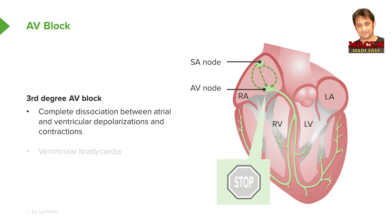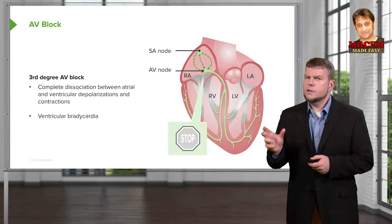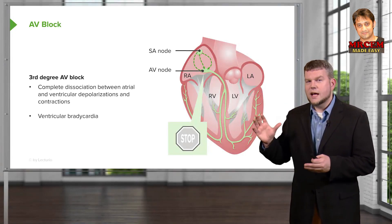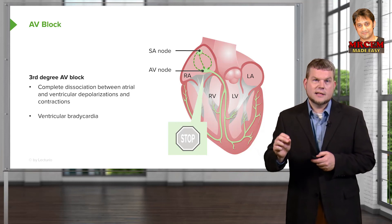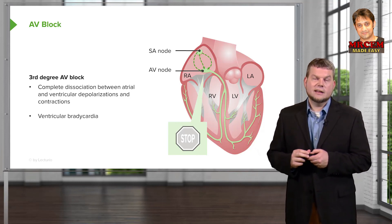The most serious problem is a type 3 AV block, which does not allow for the propagation of an action potential from the SA node to the bundle of His. You will no longer have a sinus rhythm and will have a severe ventricular bradycardia. The ECG will look much different — there will be some P waves representing atrial depolarization, but with no captured QRS complexes. We'll review this further, as we have dedicated time to look at what an ECG looks like to make sure you understand it.